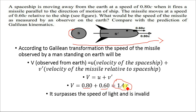This result is invalid because 1.4c surpasses the speed of light, and according to Einstein we know that we cannot exceed the speed of light. So we will use Lorentz transformation to solve this numerical.